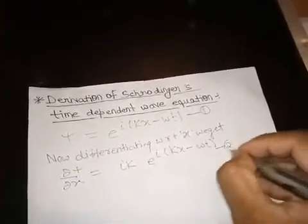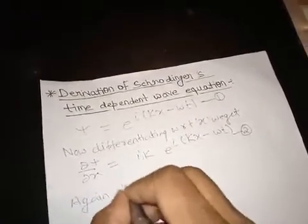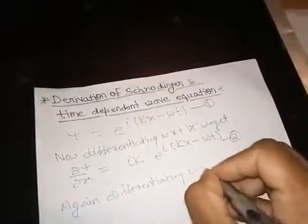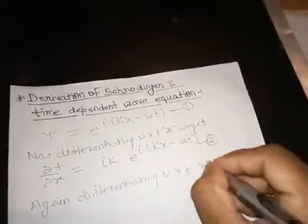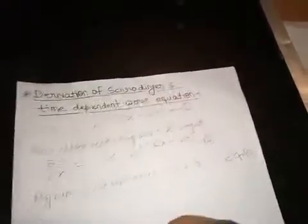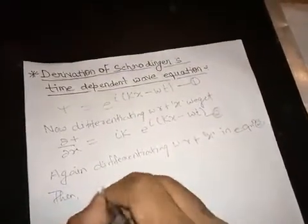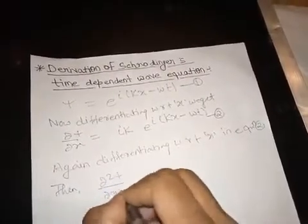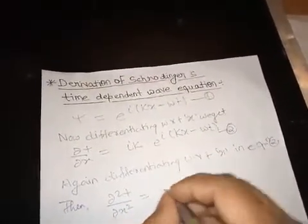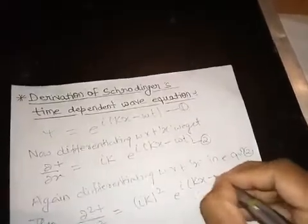Again differentiating with respect to x in equation number 2. Then ∂²ψ/∂x² equals (ik)² e^(ikx - ωt).